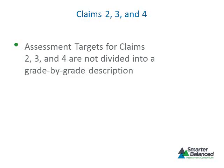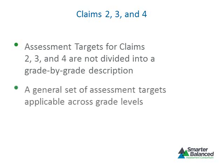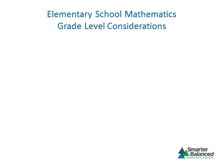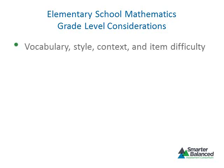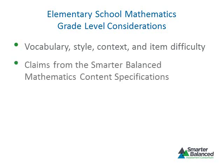Claims 2, 3, and 4 are aligned to the mathematical practices from the Common Core State Standards for Mathematics and are identical across grade levels. For this reason, the assessment targets for Claims 2, 3, and 4 are not divided into a grade-by-grade description; rather, a general set of assessment targets is provided as guidance for item and task development at each grade. The assessment targets for Claims 2, 3, and 4 were presented in the Content and Item Specifications module. This module introduced topics to consider when writing and reviewing items for grades 3 through 5, such as vocabulary, style, context, and item difficulty, as well as the claims and assessment targets for Claim 1 found in the Smarter Balanced Mathematics Content Specifications.